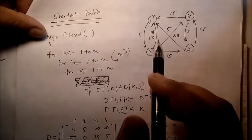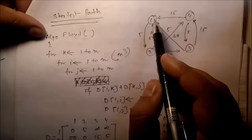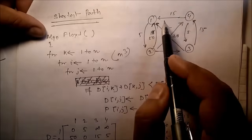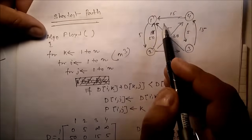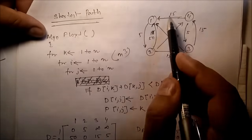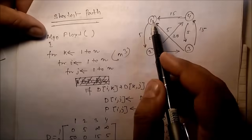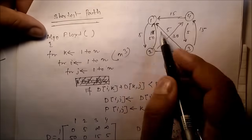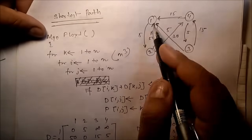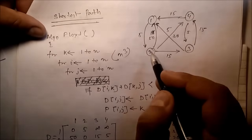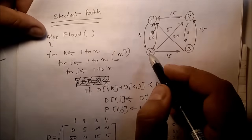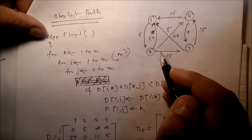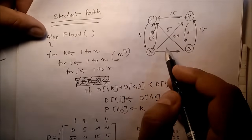We have one, two, three, four nodes and these are directed graphs. In between node 1 to 2 the distance is 5, but from 2 to 1 it is 50 — suppose it is a one-way road where 1 to 2 is 5 kilometers but due to the one-way condition, 2 to 1 is 50 kilometers. Similarly, 2 to 4 it is 5.